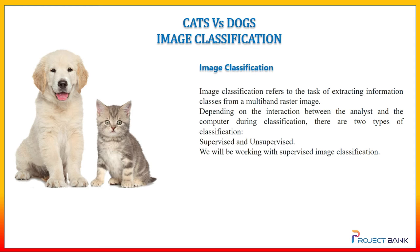Let me help you understand what raster images and multiband images are. Bands are basically telling you the information about a raster. The bands are the representation of pixel data in the form of matrices of cell values, and this representation of pixel data comprises the raster.